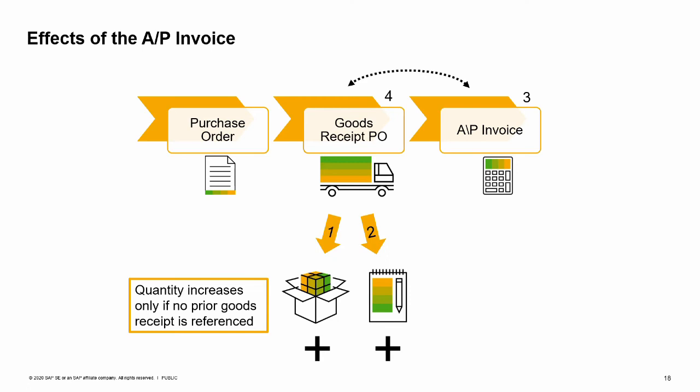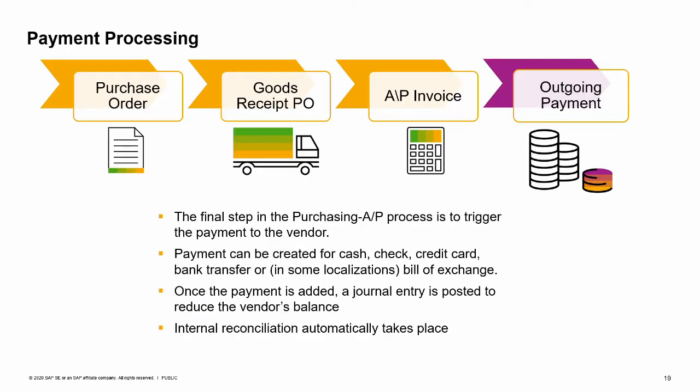Once the AP invoice is created in the system it can have the following consequences. One: the goods receipt PO increased the stock value earlier. Only if there is no goods receipt PO are the stock values updated when an AP invoice is entered. Two: the AP invoice creates a journal entry to update the vendor's balance to show the amount due. Three: you cannot change anything in the AP invoice that would affect the journal entry once the invoice is added to the system. Four: on the goods receipt PO, items that have already been partially or completely invoiced display in light gray. If the invoice is for the full quantity on the goods receipt PO, the goods receipt PO status changes to closed.